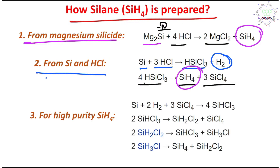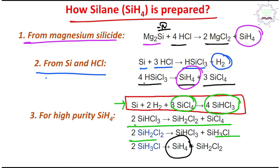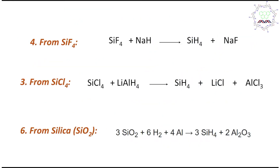The third method: silicon reacts with hydrogen and silicon tetrachloride to produce HSiCl₃, and through multiple stages this ultimately converts into SiH₄ (silane). The important part is that this produces high purity silane, which makes this process very important for solar cell applications — we need elemental silicon of very high purity. Another method: SiF₄ reacted with sodium hydride produces silane and a sodium salt.